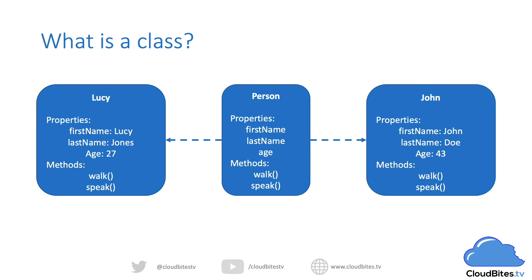And then we have John, who is John Doe and 43. So John and Lucy are both instances of our Person class. This means that we can work with these two different instances independently yet share common functionality across them. For example, the speak method might have a standard template that we want to use in both instances, and so rather than writing it multiple times, we can create one class and then multiple instances that utilize the same logic.